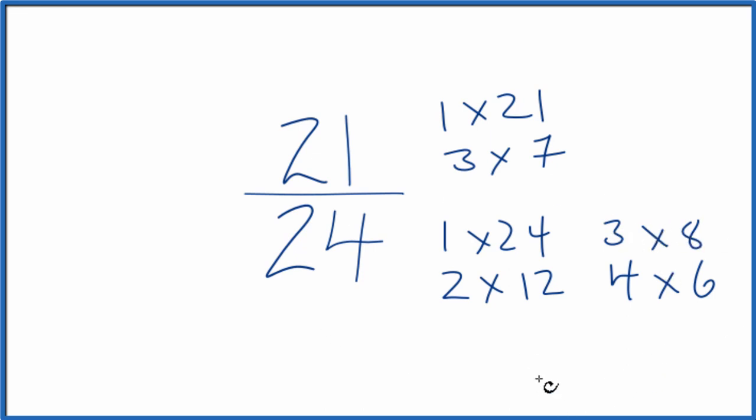We want the greatest common factor and it looks like the greatest common factor between 21 and 24 is 3.